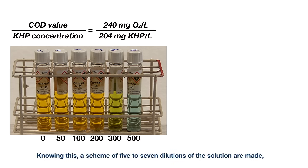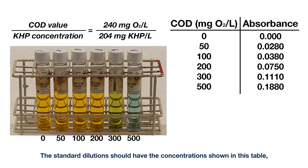A scheme of 5 to 7 dilutions of the solution are made in order to obtain enough points to fit the calibration curve. The standard dilutions should have the concentrations shown in this table, ranging 0 to 500 mg of oxygen per liter.